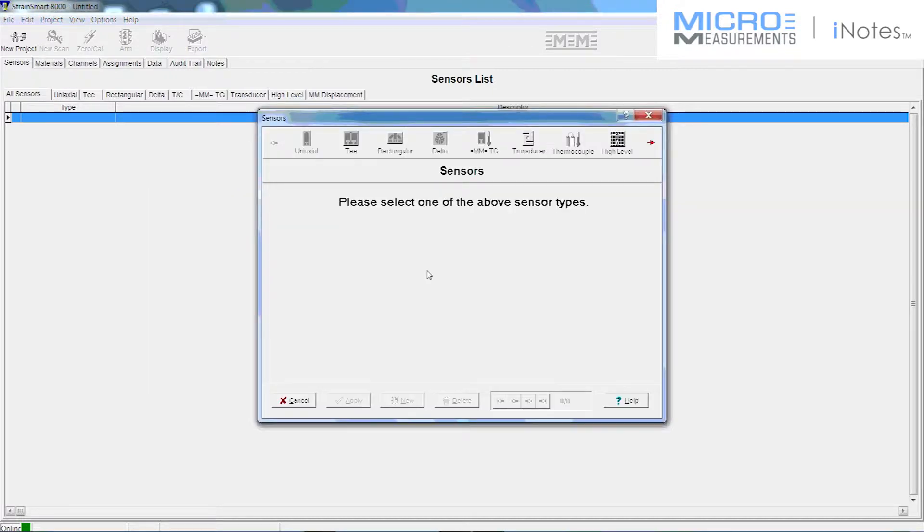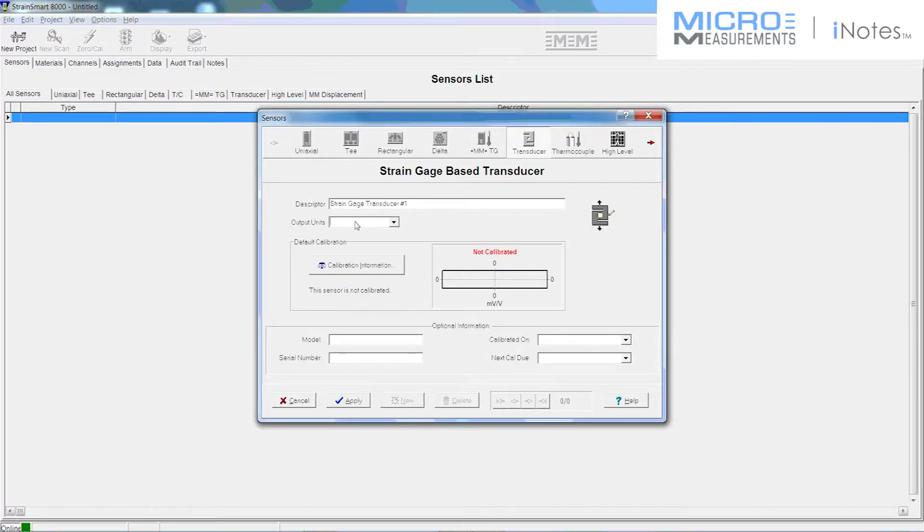I'm now going to set up our input using System 8000 and our StrainSmart software. And I want to put this in as a calibrated transducer. I'm going to create a new sensor. In this case a transducer. And I'm going to use Newton meters as my output units. But I'm not going to put in any calibration information at this point. We're going to do that by putting a known input into our transducer.